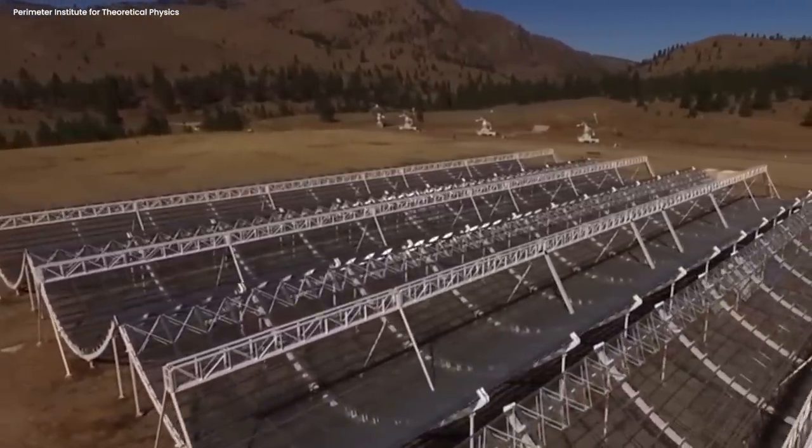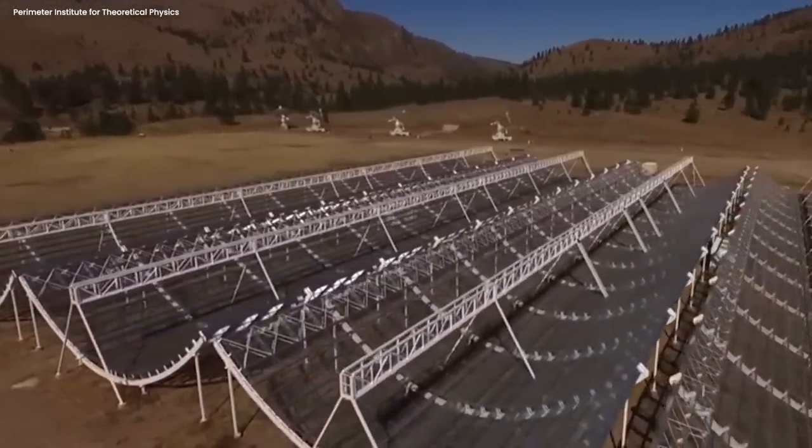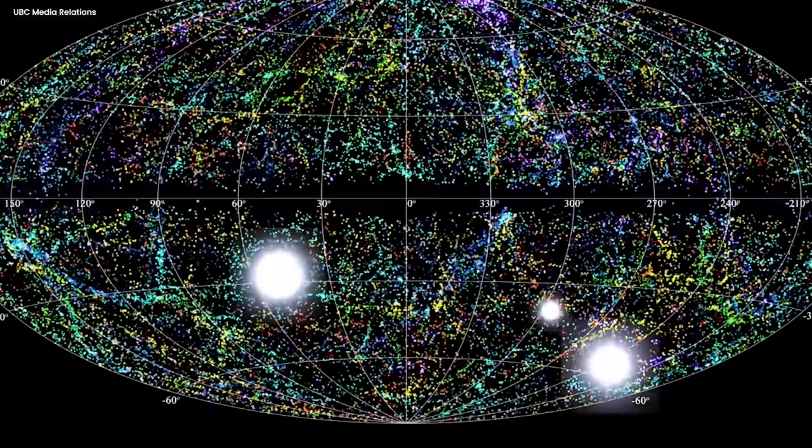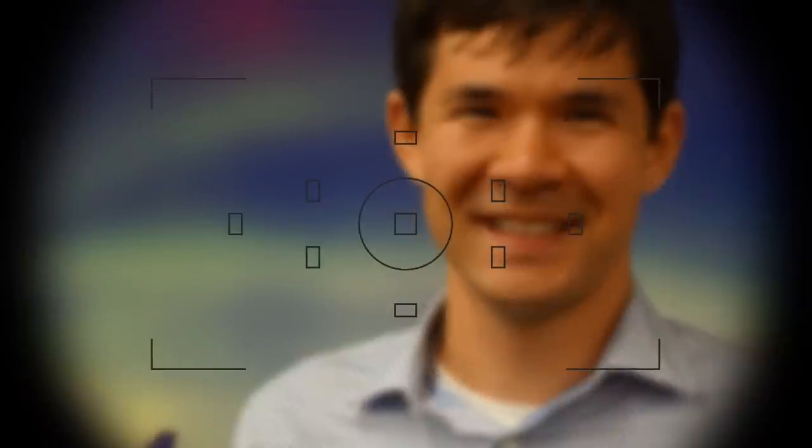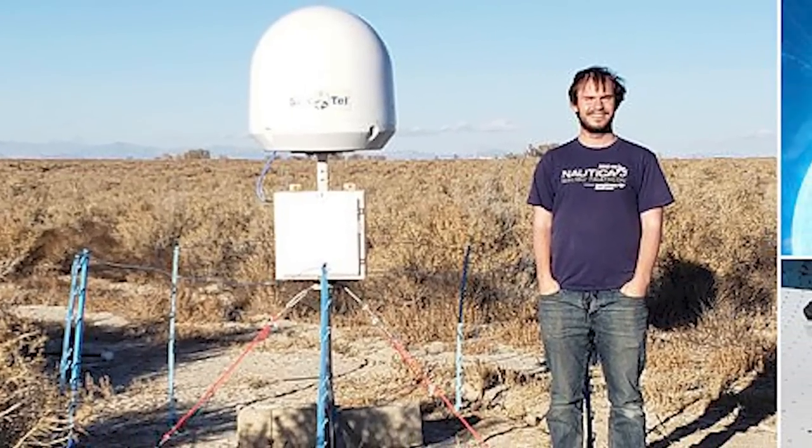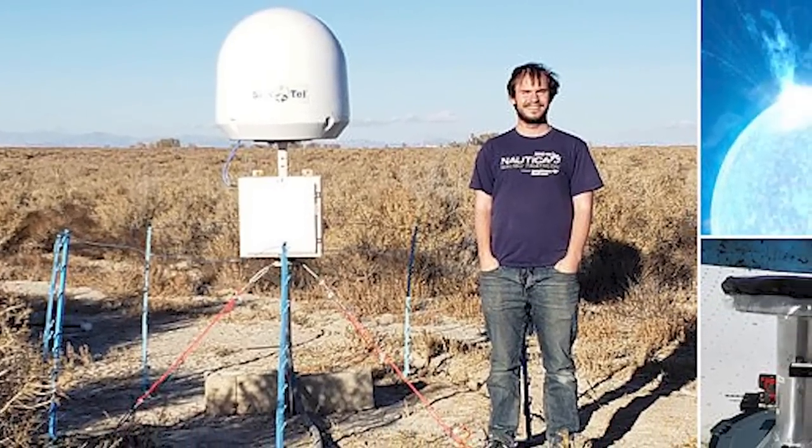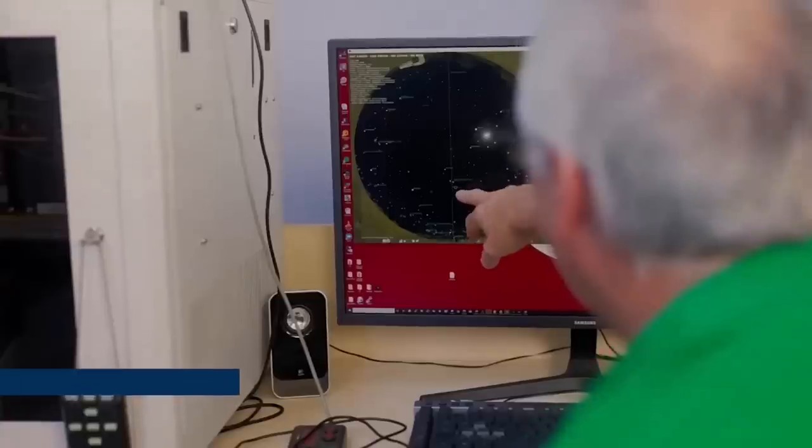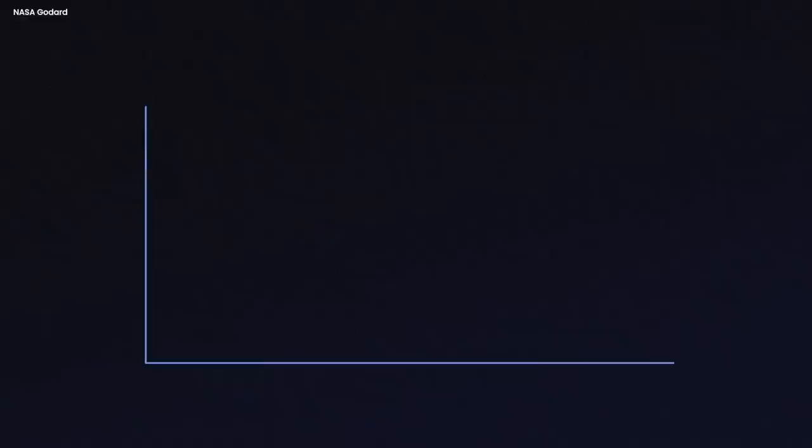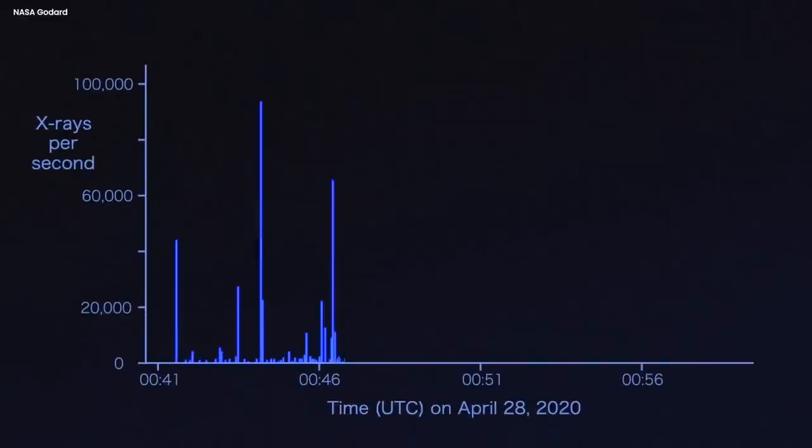What's incredible is that CHIME wasn't even actively observing in the direction of the burst, yet it caught the signal loud and clear in its peripheral vision. STARE-2 also saw it, and it's only a set of a few radio antennas literally made out of cake pans. These radio bursts weren't just random and weren't trying to hide. They wanted to be heard, and that goal was achieved immediately.